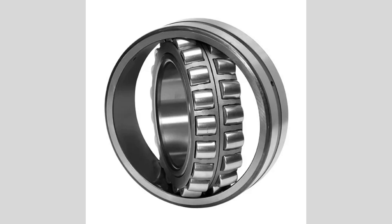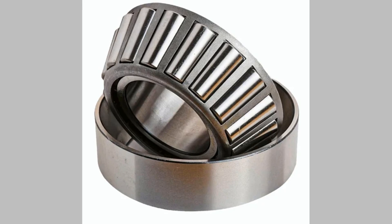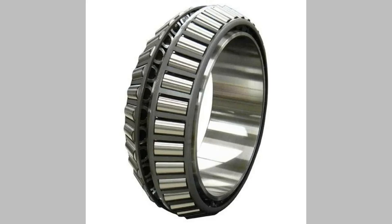Spherical roller bearings come in several configurations, including single-row and double-row designs, allowing for flexibility based on load requirements and space constraints. Tapered roller bearings are designed to support both radial and axial loads, making them suitable for a wide range of applications. They consist of an outer ring, an inner ring, and tapered rollers arranged between the two rings. The tapered shape of the rollers allows them to make linear contact with the raceways, which facilitates the transfer of loads.